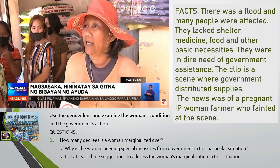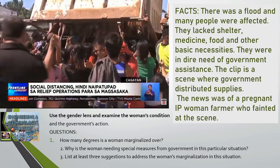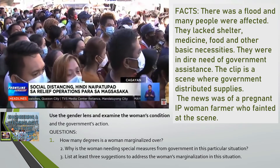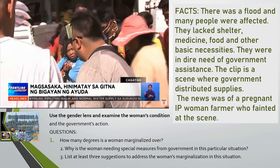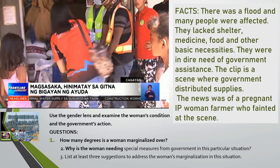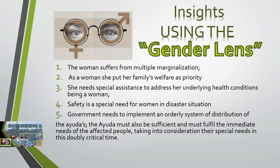Let us answer these questions as we analyze this case: One, how many degrees is the IP woman marginalized? Two, why is the woman needing special measures from government in this situation? Three, list at least three suggestions to address the woman's marginalization. Our analysis: the woman suffers from multiple marginalization — at least four degrees. She is marginalized as: one, a woman; two, a farmer; three, pregnant; four, a member of the IP community; and five, a calamity victim.